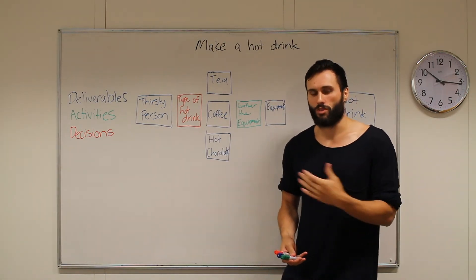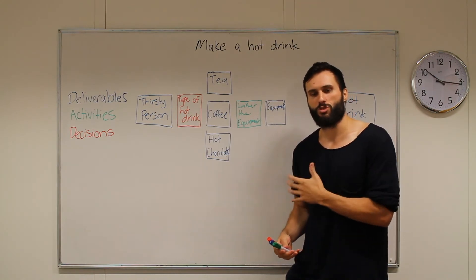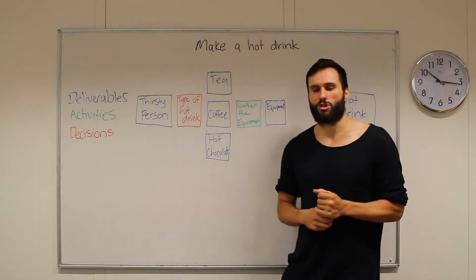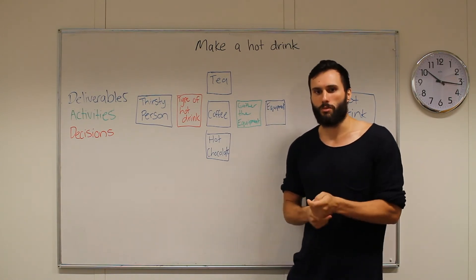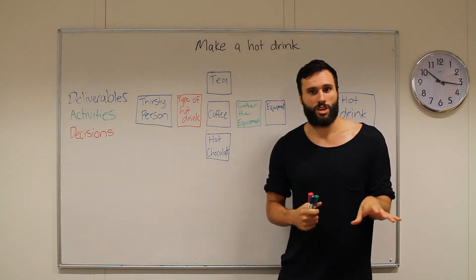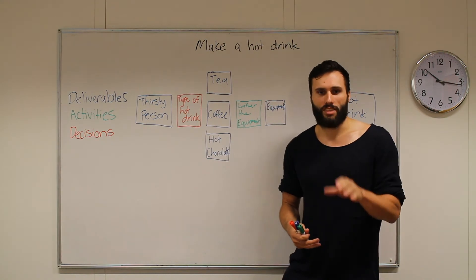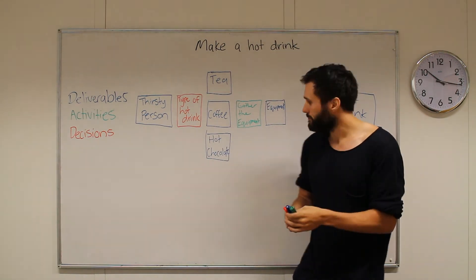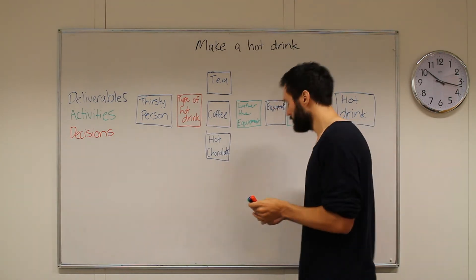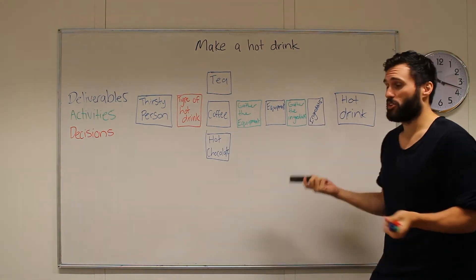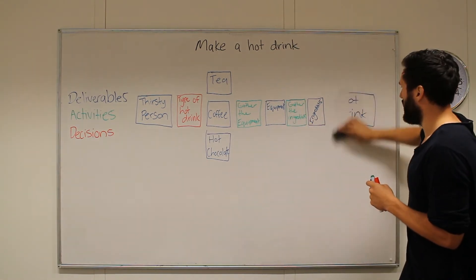What's next in the process? We have the equipment, but that's not going to be enough to make a hot drink — we need the ingredients. We need the water, the cocoa, the powder, the tea bag, coffee powder, sugar, milk, etc. So our next activity will be to gather the ingredients, 'gather' being the verb. Therefore, the deliverable will be 'ingredients.' This is simple and obvious, which is the best type of process mapping. As you can see, I've run out of a bit of space here, but the good thing with process mapping — if you're doing it with post-it notes or on a whiteboard — is that you can easily just remove and replace.